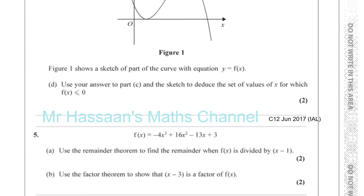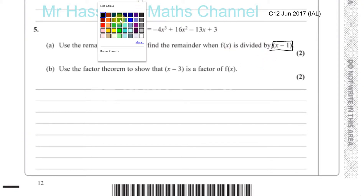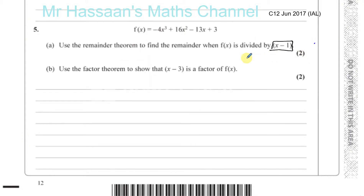So they specified what method to use, which is actually the simpler way of doing it. We want to find the remainder when this is divided by x minus 1, so we don't have to do long division. What we can do is substitute inside the function f of x the value of x which makes this bracket — what's divided by — equal to 0. That's what we have to do here. So if we substitute inside this function what makes this bracket 0, we will then be able to find the remainder when it's divided by this value.